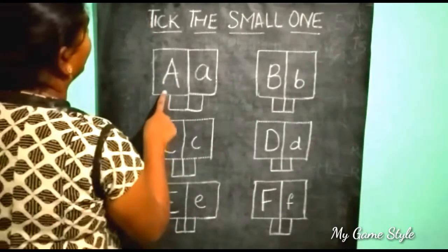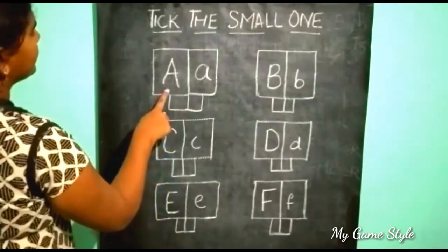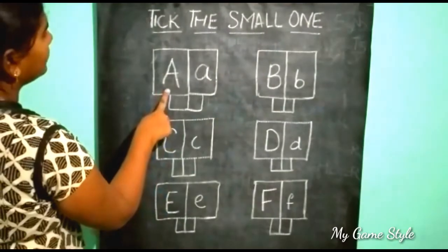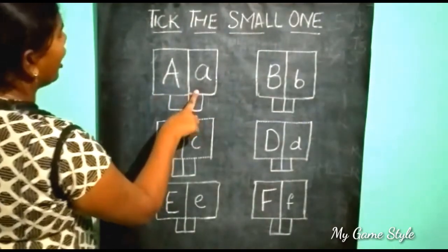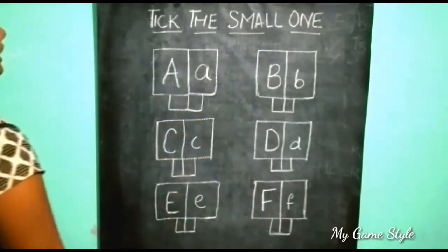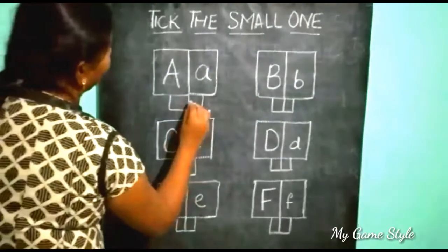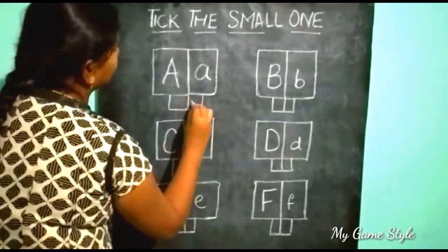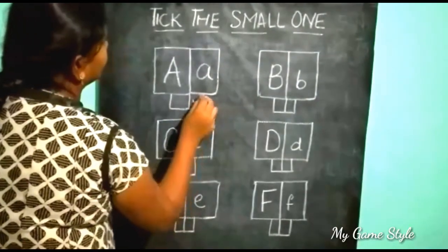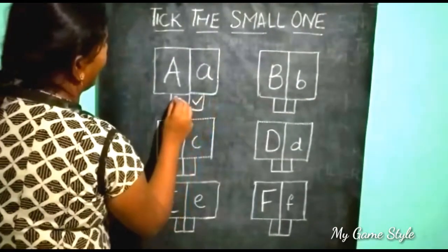Here, this is a big one. This is a small one. So we need to tick the small one. This is wrong.